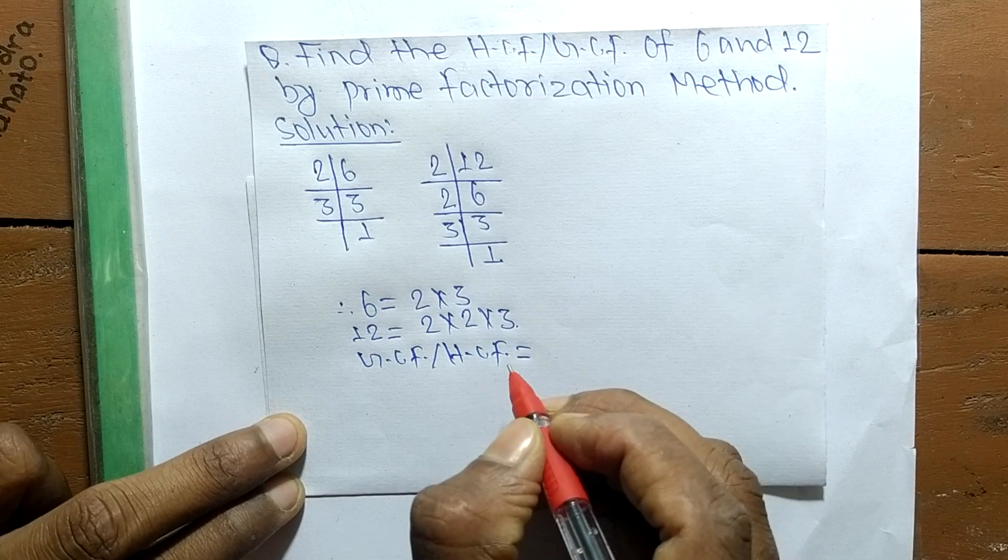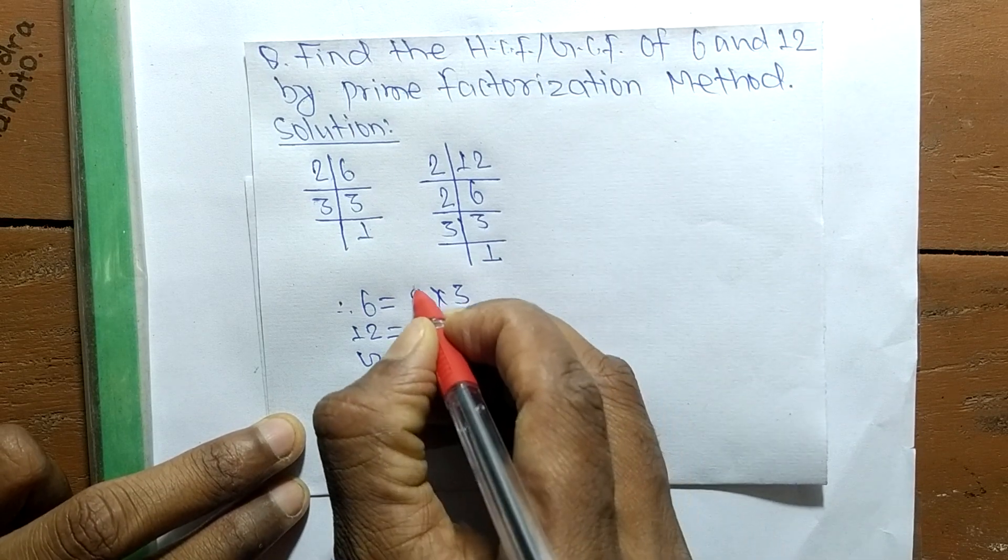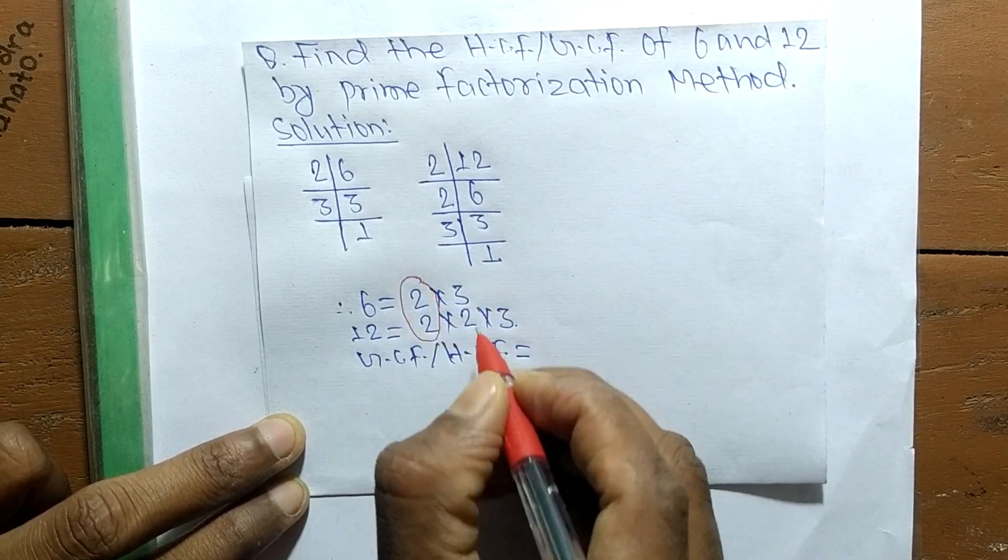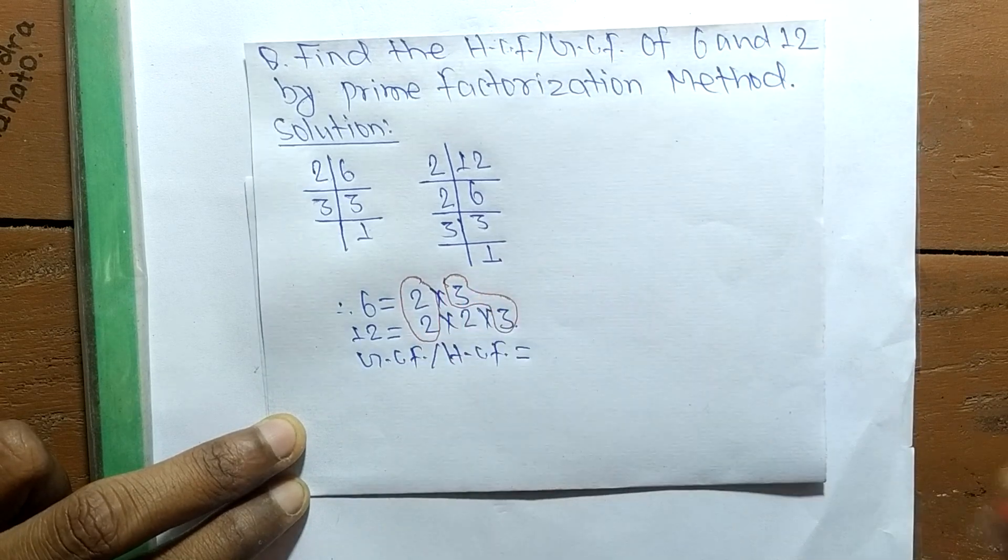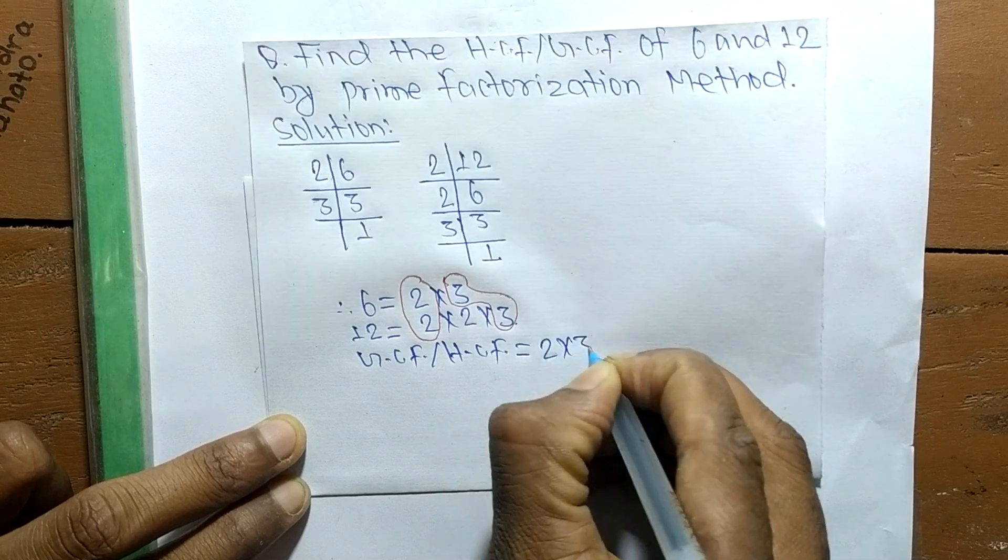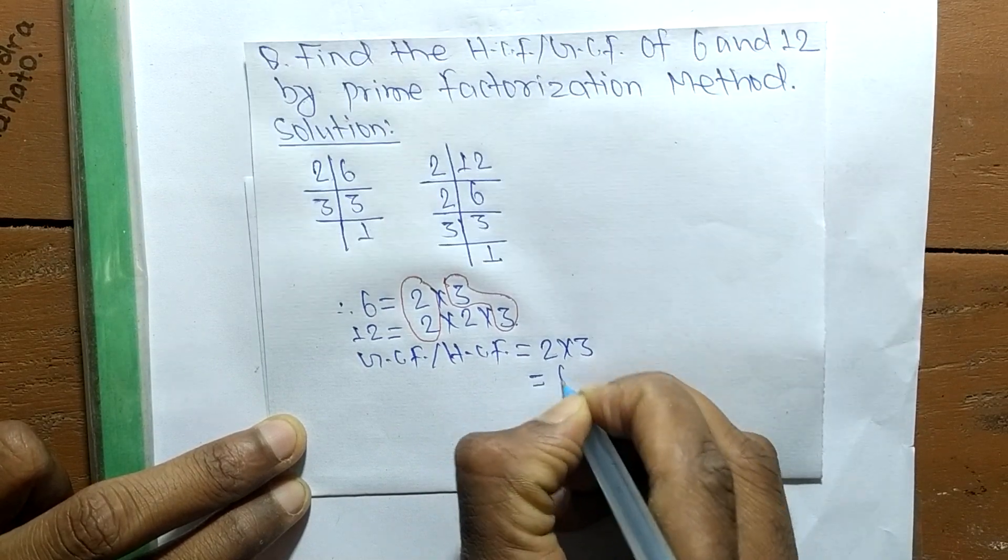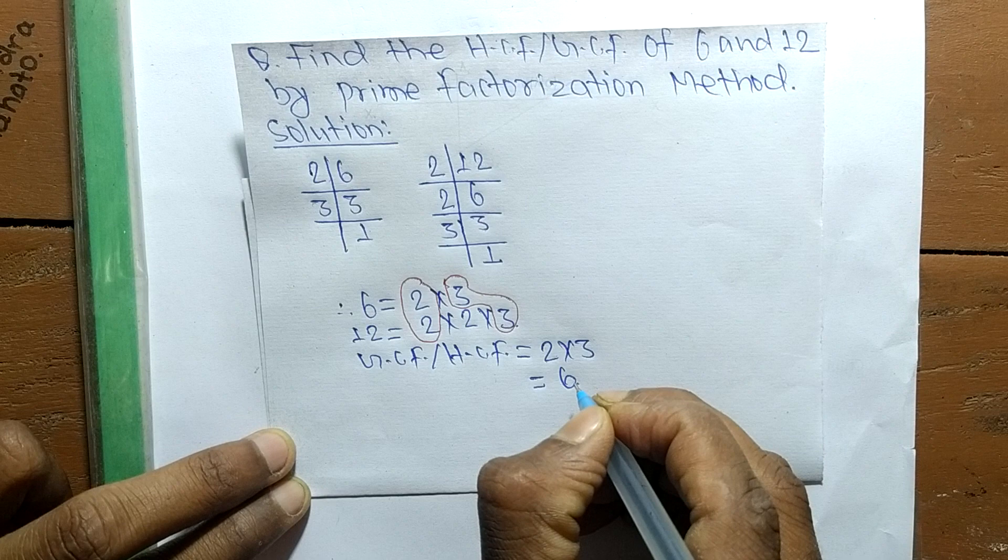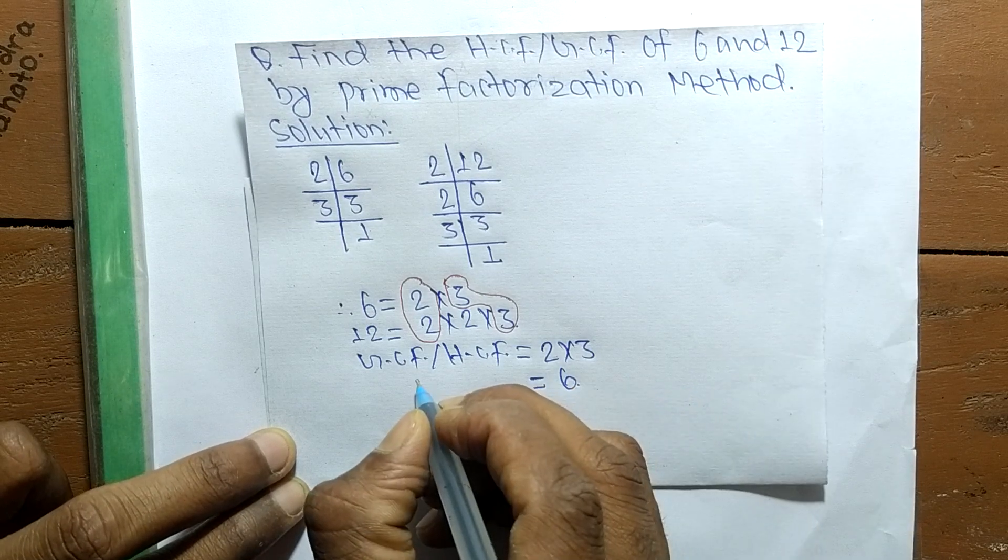The first common factor here is 2, and the second common factor is 3. So it is 2 times 3, which equals 6. Therefore, 6 is the GCF or HCF of 6 and 12.